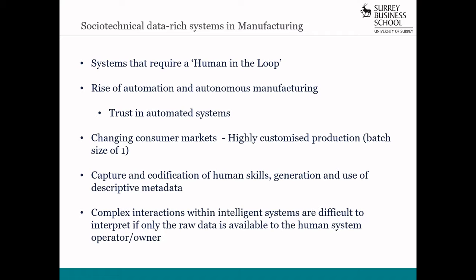So what do we mean by socio-technical data-rich systems? In the opinion of many authors, these are systems that still require a human in the loop — highly automated systems that still require some mediation by the human. We've certainly seen the rise of automation and autonomous manufacturing in many sectors, but that raises the issue of trust in such automated systems, and this is indeed another reason why human-in-the-loop is still needed.